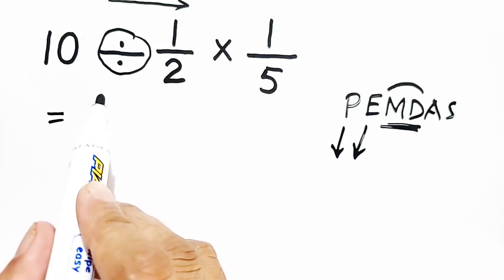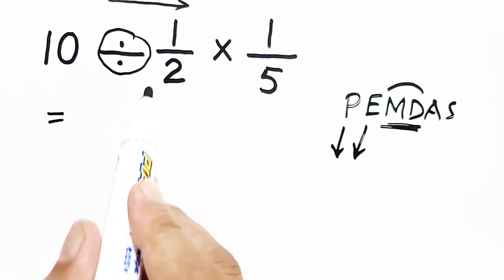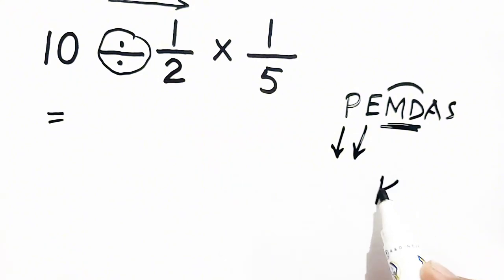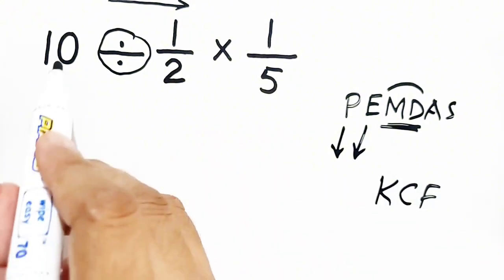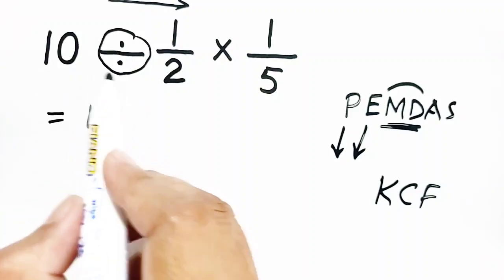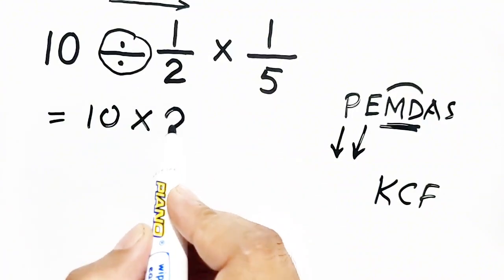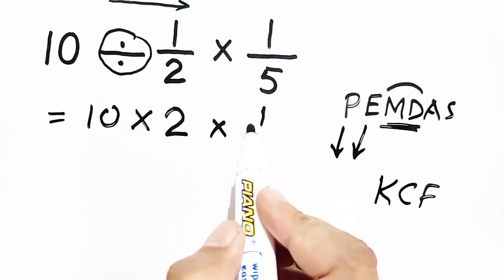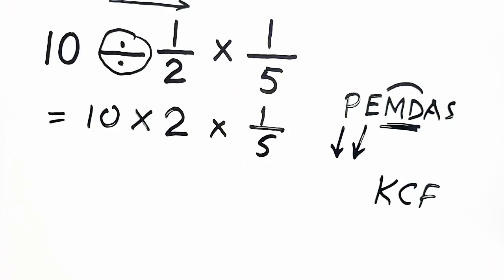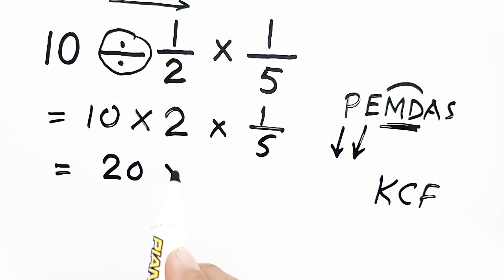So we will first divide: 10 divided by 1/2. It's looking tough, so we will apply the KCF rule here. K means keep it — so 10 is kept as itself. Change it — it will be multiplied. Flip it — it will become 2, multiplied by 1/5. So now 10 multiplied by 2 will become 20, multiplied by 1/5.